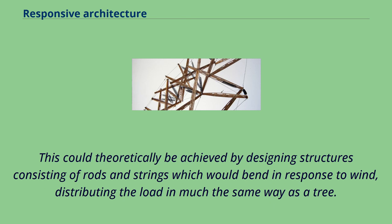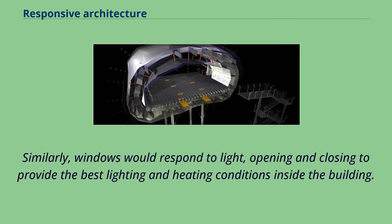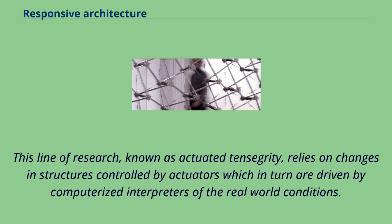This could theoretically be achieved by designing structures consisting of rods and strings which would bend in response to wind, distributing the load in much the same way as a tree. Similarly, windows would respond to light, opening and closing to provide the best lighting and heating conditions inside the building. This line of research, known as actuated tensegrity, relies on changes in structures controlled by actuators which in turn are driven by computerized interpreters of the real-world conditions.